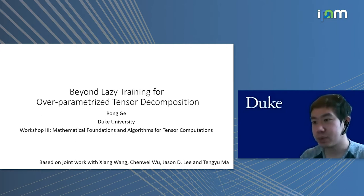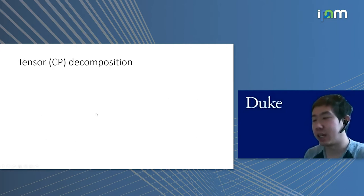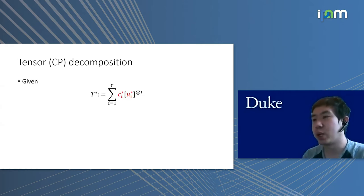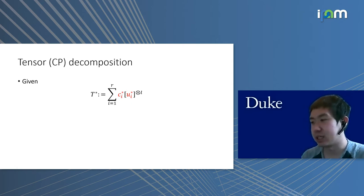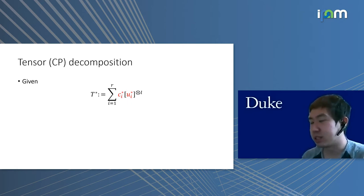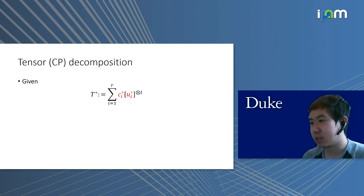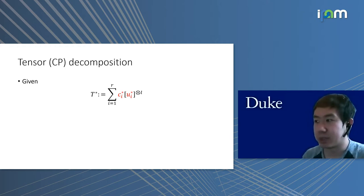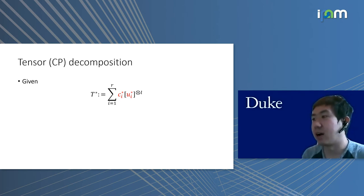Let's first look at a basic tensor decomposition question. Suppose we are given an L-th order tensor T-star that has rank R in this form. T-star is the summation over R components, where each component is some c_i-star times u_i-star tensored with itself L times. So T-star is a symmetric order-L tensor of rank R.